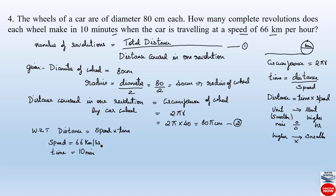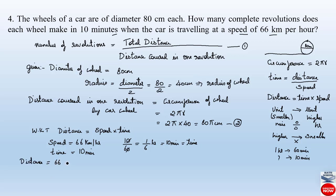We know that 1 hour = 60 minutes. So 10 minutes = 10/60 = 1/6 hour. Now we can find the distance: Distance = Speed × Time = 66 km/h × 1/6 h. Cancelling, 66 ÷ 6 = 11. So the total distance covered is 11 kilometers.